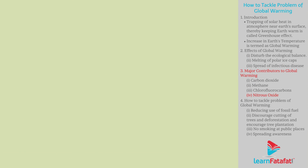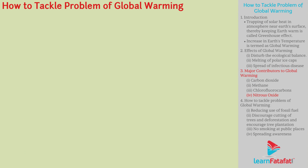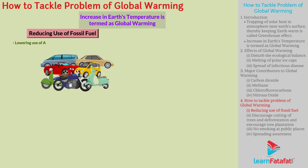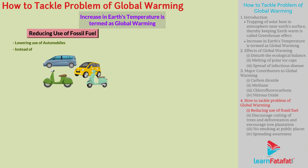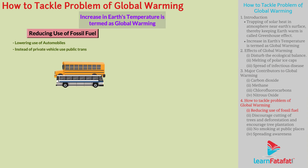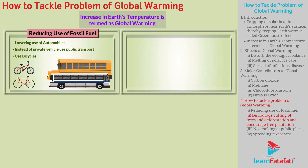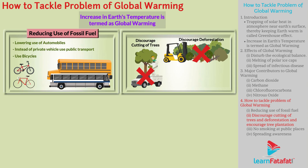How to tackle the problem of global warming? By reducing the use of fossil fuels, which can be done majorly by lowering the use of automobiles. Instead of private vehicles, we can use the public transport system. Even use of bicycles is fashionable nowadays. We should also discourage cutting of trees and deforestation, and encourage tree plantation.